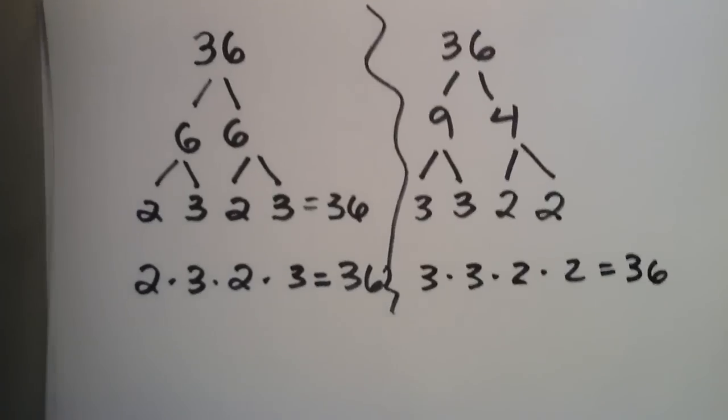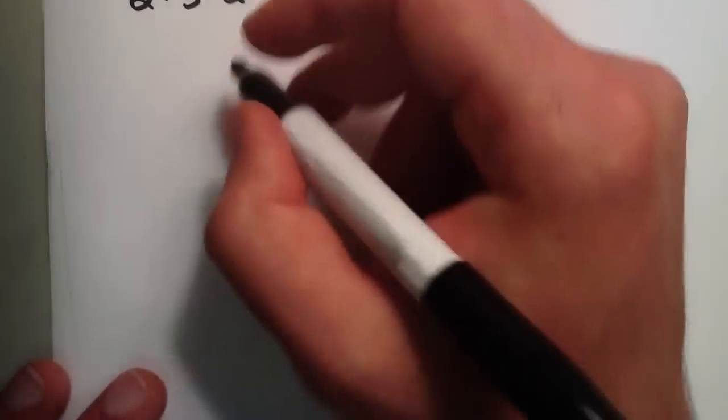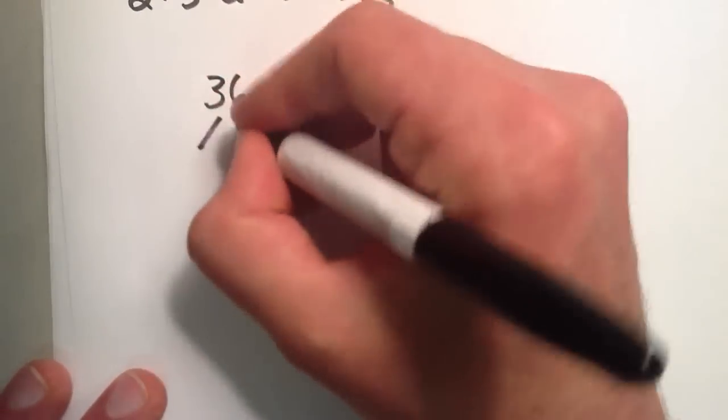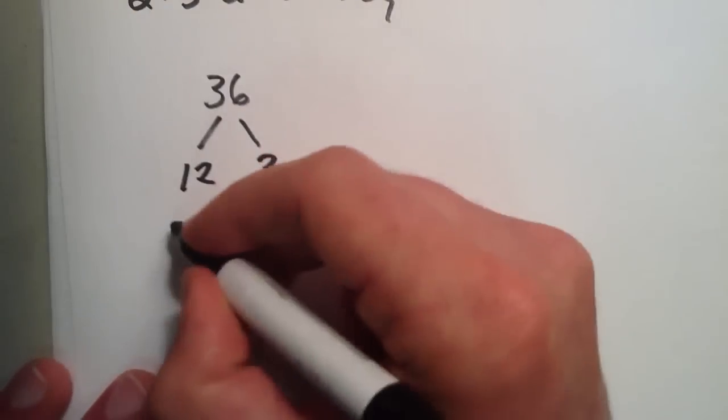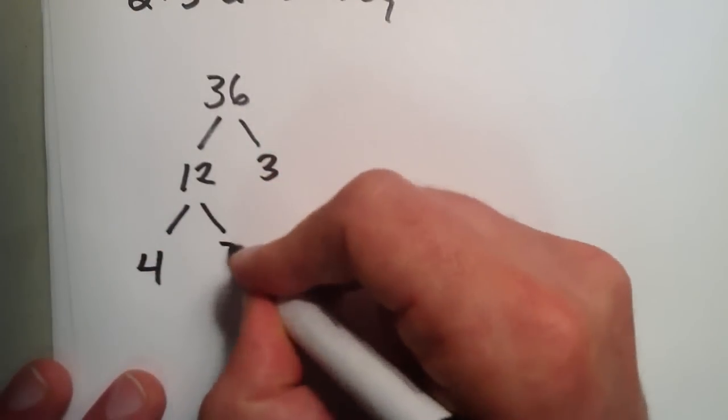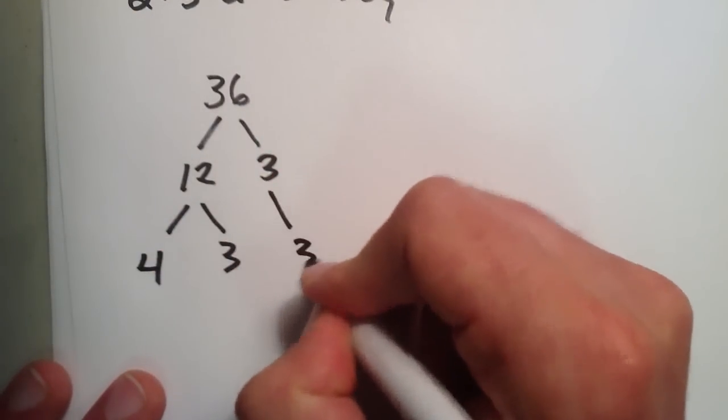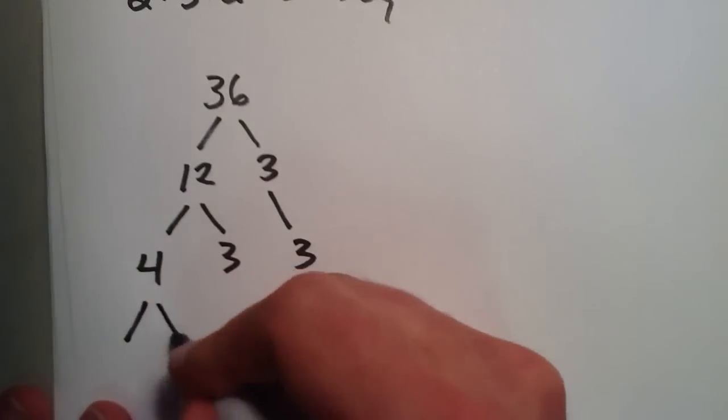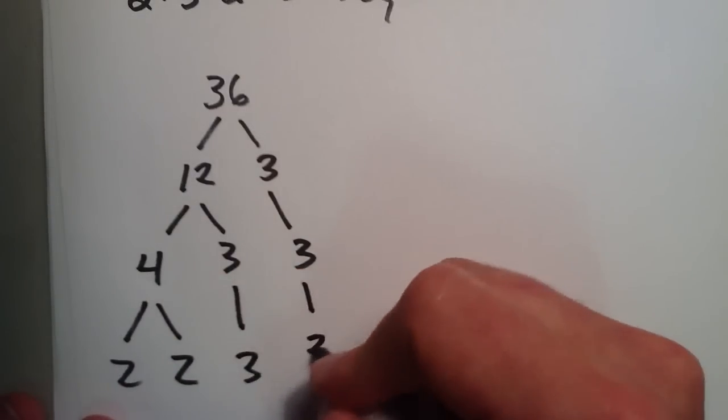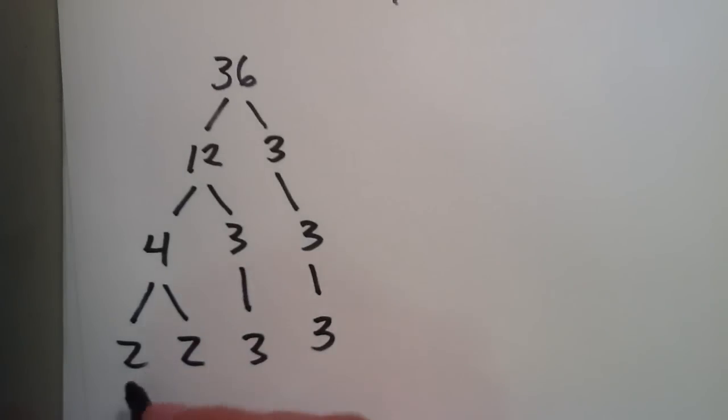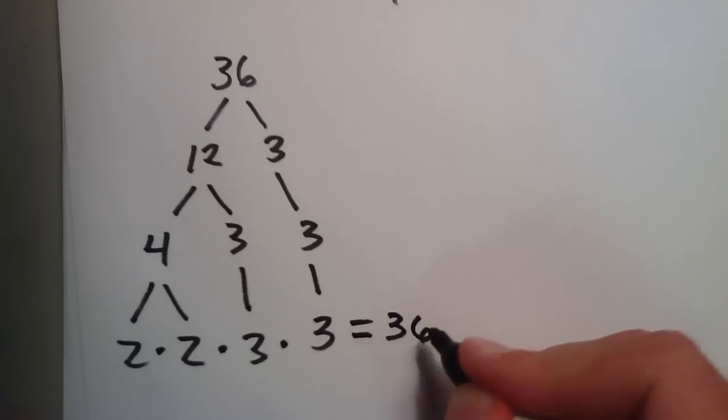Just to illustrate this a little bit more, we could also take 36 and we could break that down into 12 and 3. And 12 could be broken down into 4 and 3. We'll bring this 3 down since it's already prime. And 4 gets broken down into 2 and 2. And once again, we have the same 4 numbers: 2 times 2 times 3 times 3 equals 36.